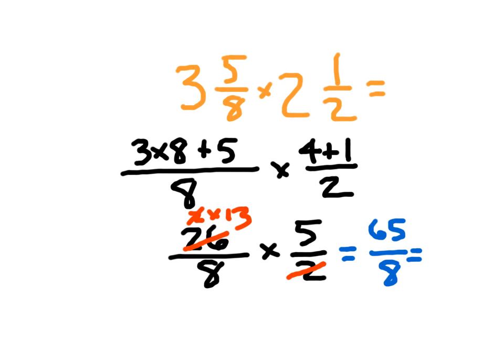That final step is we need to go ahead and write that back in simplest form. Simplest form in this case is just going to be a mixed number. 8 goes into 65, 8 whole times with the remainder of 1. And that's why it's 8 and 1 eighth. We read 65 over 8 as 65 divided by 8. If I could divide that remainder of 1, I would have divided it into 8 parts. That denominator stays the same when you're converting to a mixed number.